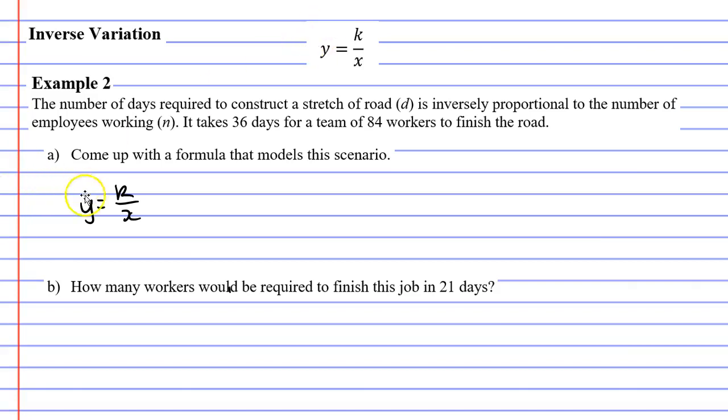Now, you might remember that this formula means that y is inversely proportional to x. But in our example, we're told that D is inversely proportional to N. So we need to change it so that it's D equals k over N this time.